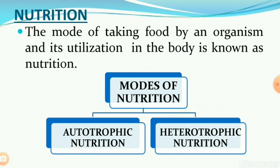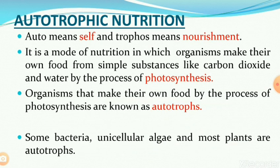Today we will discuss only autotrophic nutrition. The word 'auto' means self and 'tropos' means nourishment. So it is a mode of nutrition in which organisms make their own food from simple substances like carbon dioxide and water by the process of photosynthesis. The organisms that make their own food by the process of photosynthesis are known as autotrophs.